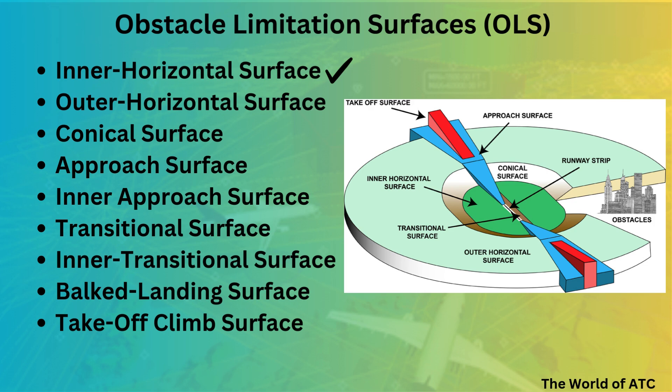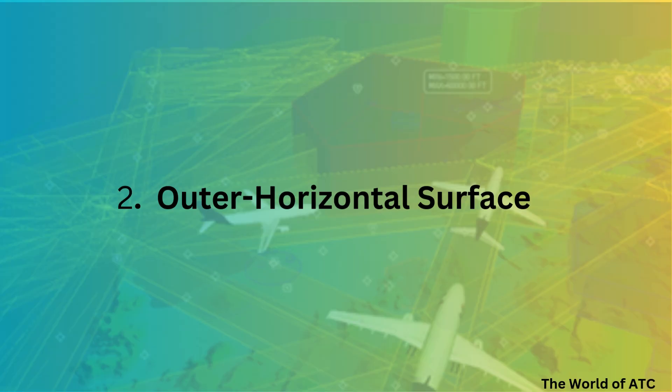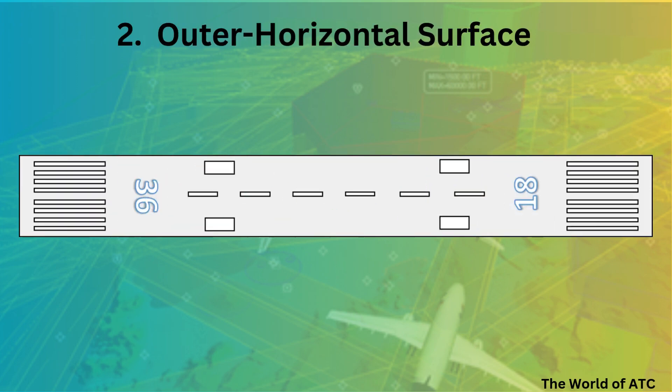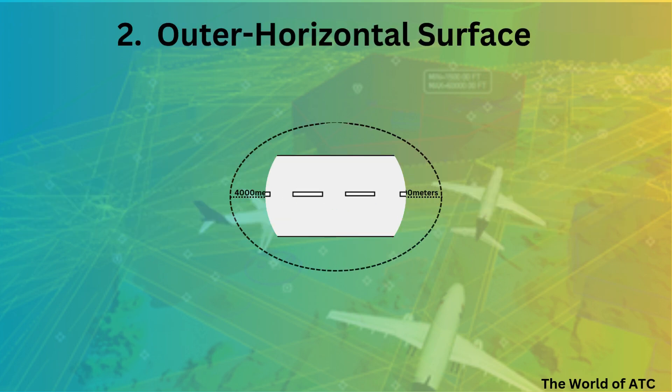In the last video, today we will be proceeding to our second surface, that is outer horizontal surface. Now imagine a runway and imagine another surface, an imaginary surface which is made up of two circles.